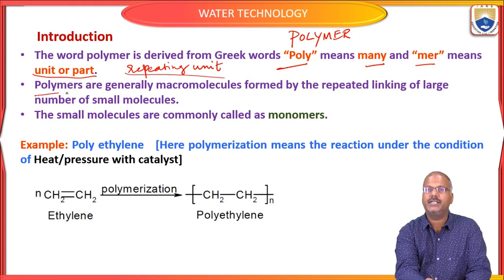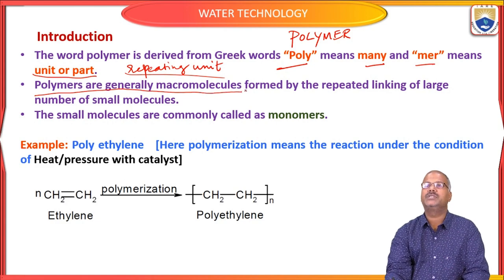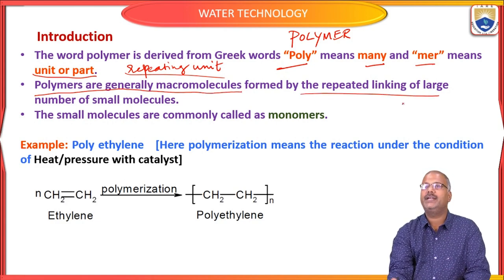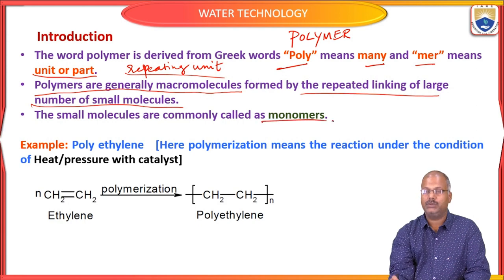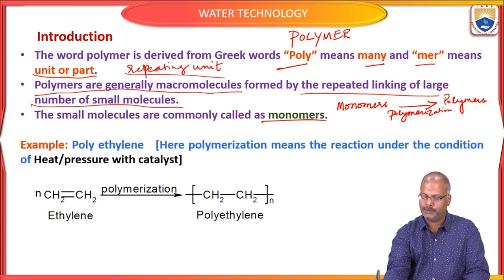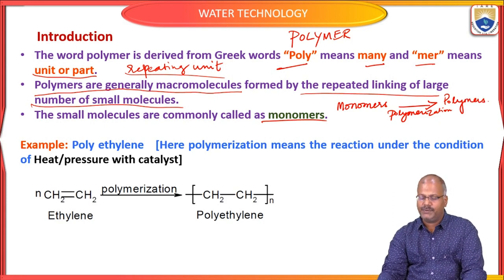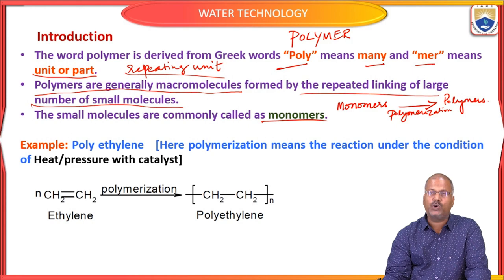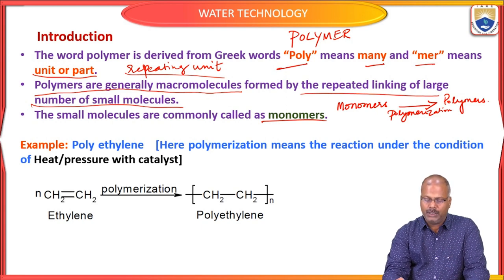Polymers are generally classified under macromolecules, because they are formed by the repeated linkage of a large number of small molecules. The small molecules are commonly called monomers. Monomers undergo polymerization to give polymers. Polymers are said to be macromolecules — very big — having very high molecular weight compared to normal compounds.